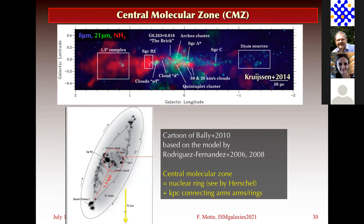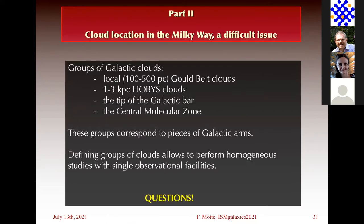Summary of Part 2: I've presented different groups of galactic clouds — going from the closest to slightly further to the most extreme at the tip of the bar — and trying to understand the central molecular zone and the outer galaxy. These groups of clouds are pieces of galactic arms, and they are very important if you want to perform studies that are homogeneous in distance, because you don't want to mix structures you're observing at 8 kiloparsecs with those at 1 kiloparsec.